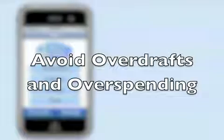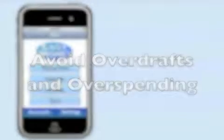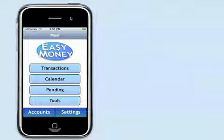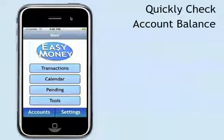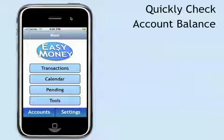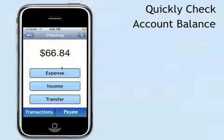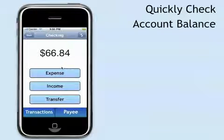Avoid overdrafts and overspending. You can use Easy Money to avoid overdraft fees and overspending by quickly checking your account balance before making a purchase. To see your account balance, go to Transactions, and there it is — your present balance if you're not using passive budgeting.